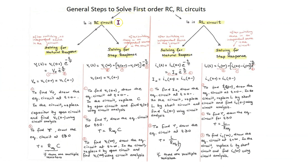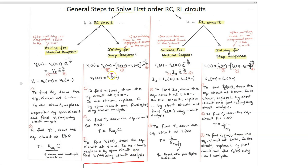The general steps to solve any first-order RC or RL circuit are shown here. For an RC circuit, first we need to determine whether we are solving for the natural response or the step response. After that, we need to determine the parameters that make up the natural response. In this example, we will be solving for the step response of a first-order RC circuit, and we'll see how these steps are applied in a systematic manner.